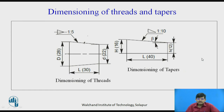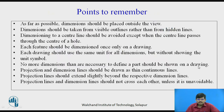Then, dimensioning of threads and tapers. For taper on both sides, a triangle is used. For taper on one side, only a right-angle triangle is used on that side. Here you have a triangle on both sides for a double taper, and for a single taper and thread, the appropriate symbol is applied.